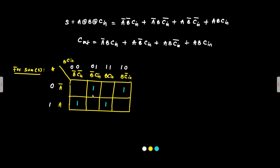The occupied cells are present diagonally, so diagonal grouping is not possible — diagonal pair formation is not possible. We will form single-member groups; no pair formation is possible here, or any other kind of group formation. So there is no way we can simplify this Boolean expression — it will stay as it is. This is the standard expression; it is already the simplest expression that exists for the Sum. We cannot simplify it further.